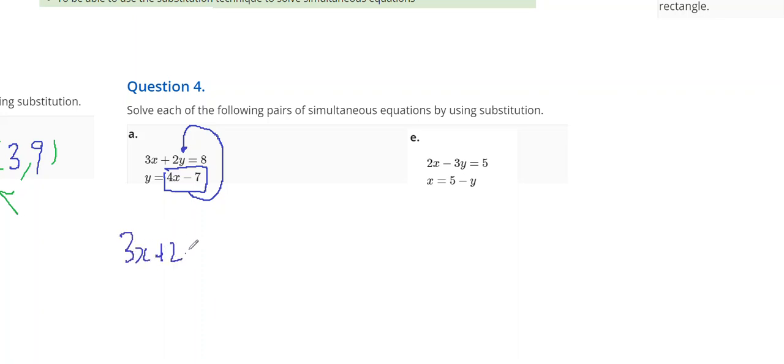I've got 3x plus 2 lots of equals 8. And I'm going to replace y with 4x minus 7.